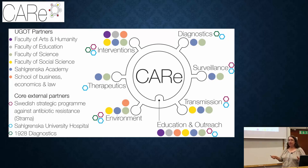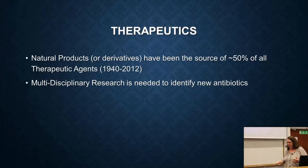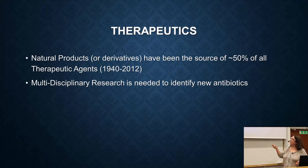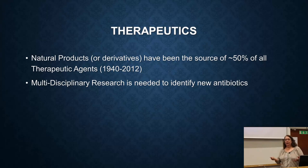I'm going to start with therapeutics — finding new antibiotics. Natural products or their derivatives are the main source of at least half of the drugs in use today, and for that reason a lot of effort is focused on natural products.